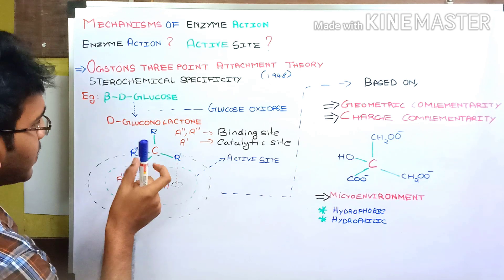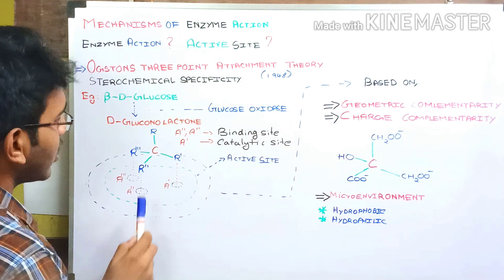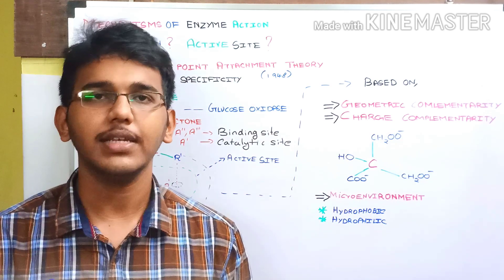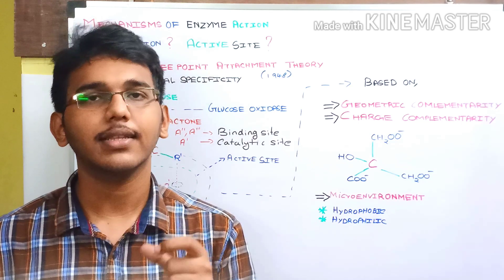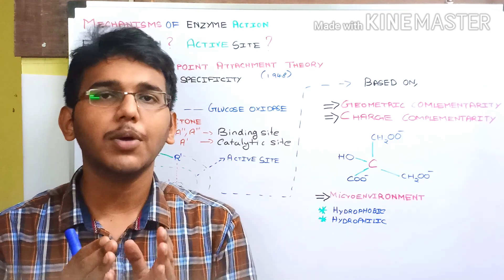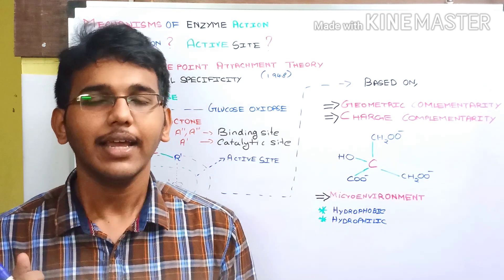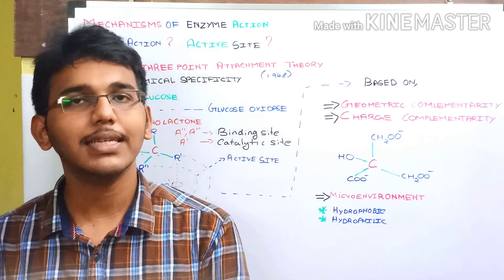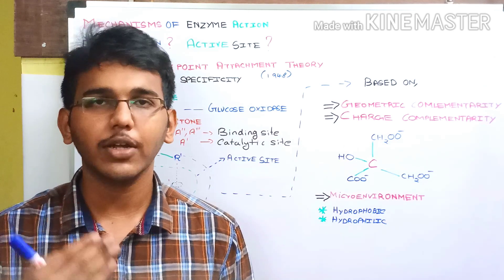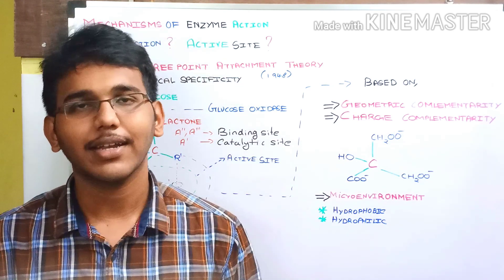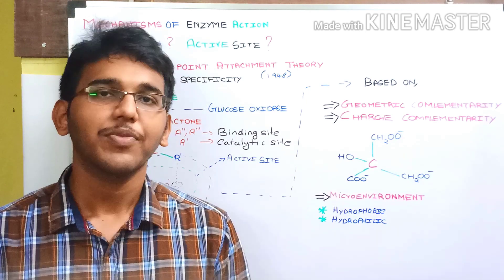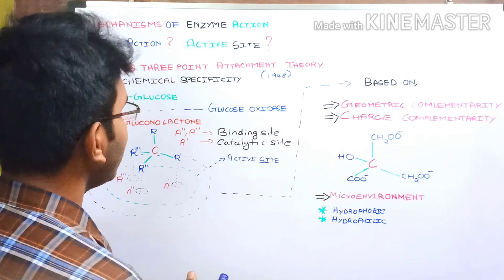What is a binding site and catalytic site? When a substrate interacts with the enzyme, it first binds at the binding site. If the enzyme finds the substrate to be specific, it will undergo conformational changes and bring the catalytic site into close vicinity to the substrate groups to achieve enzyme activity. If the enzyme finds the substrate is not specific, it will not expose the catalytic site. The function of the binding site and the catalytic site is to catalyze the reaction after binding with the substrate.